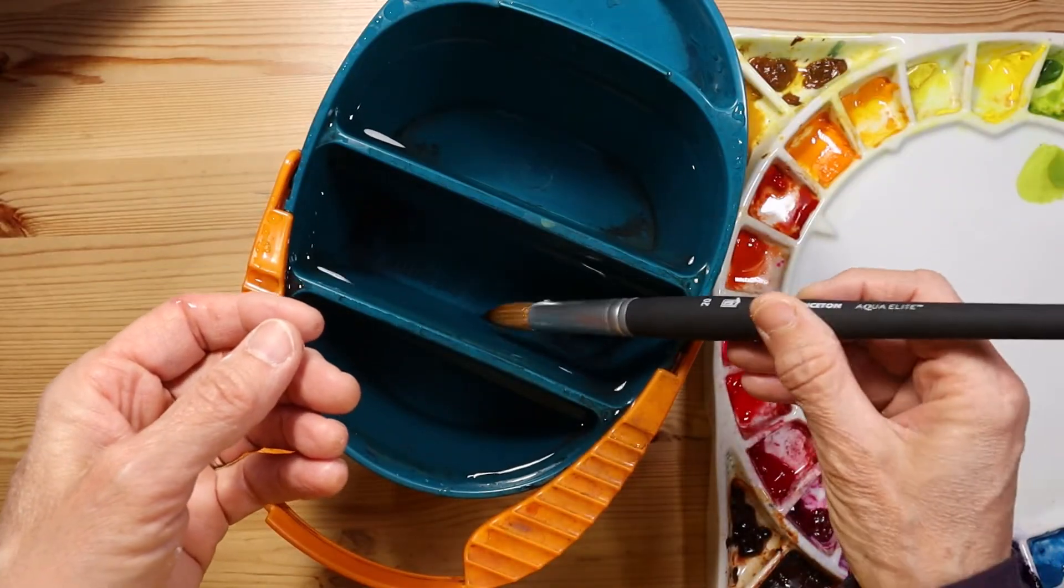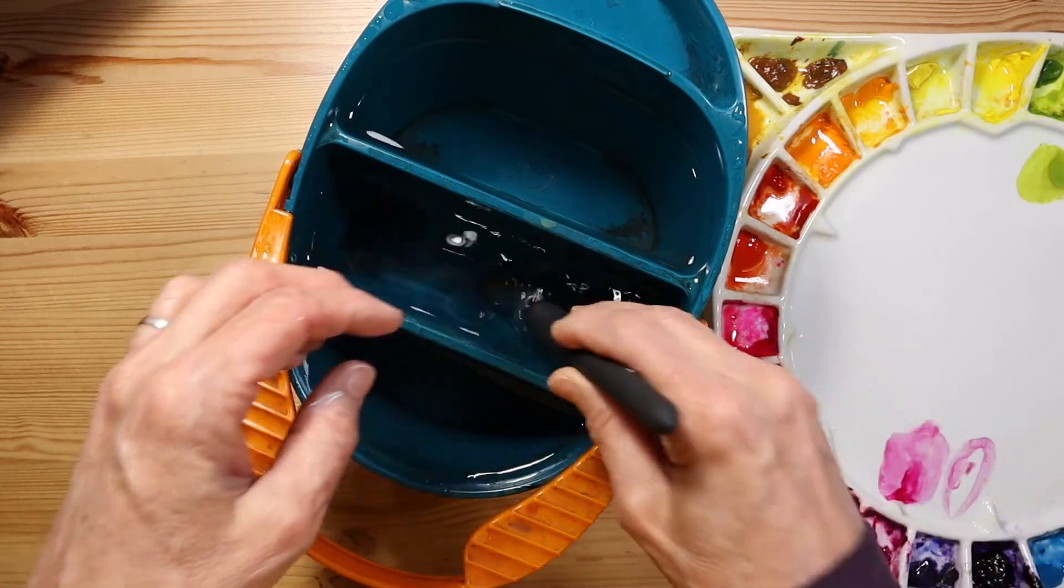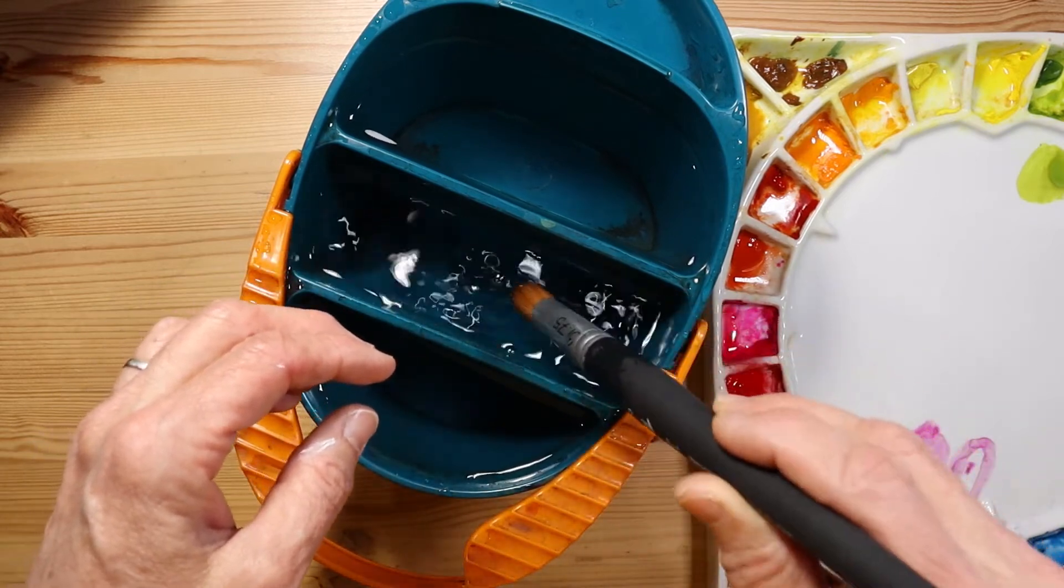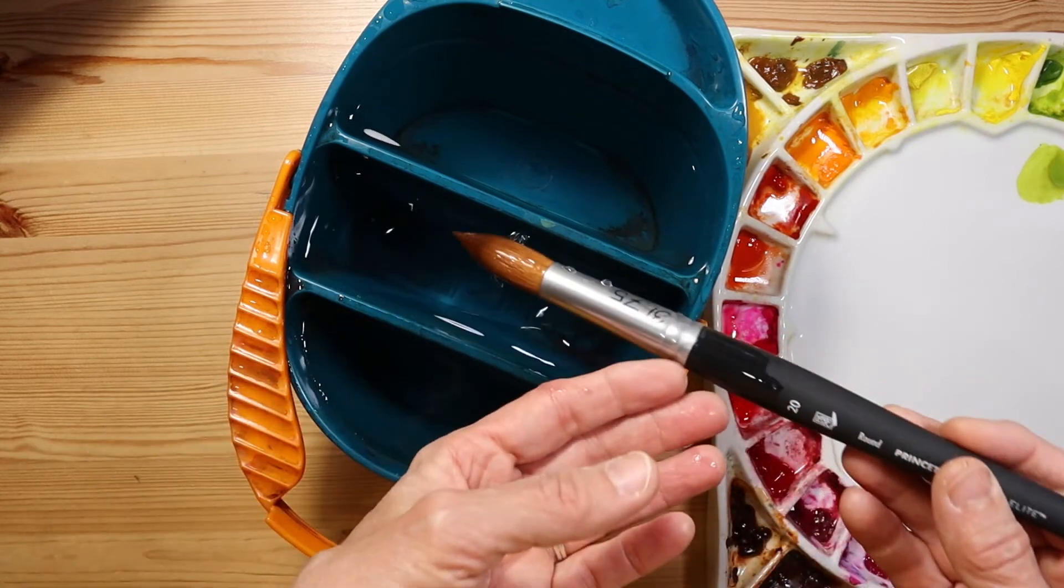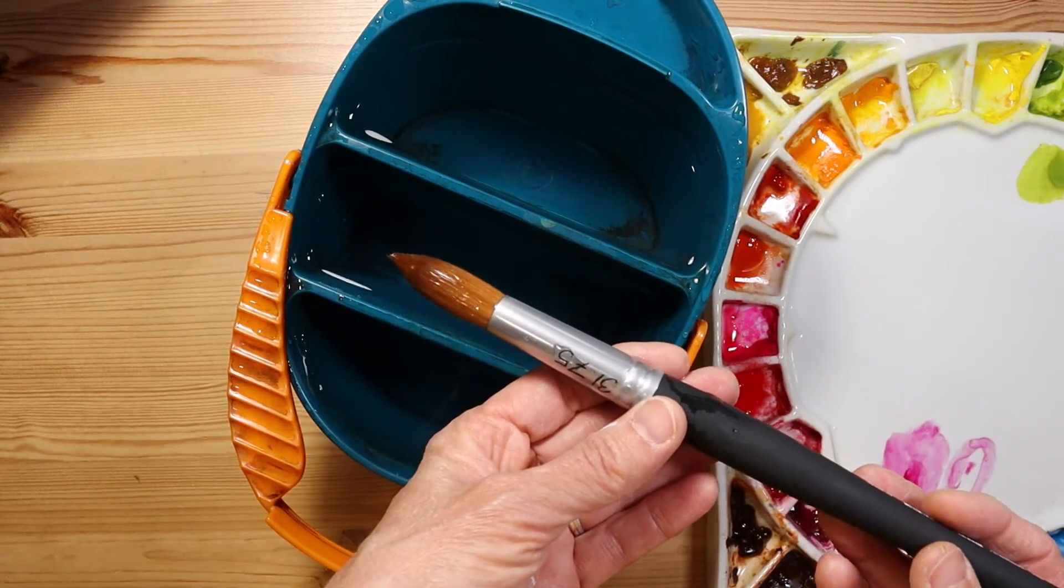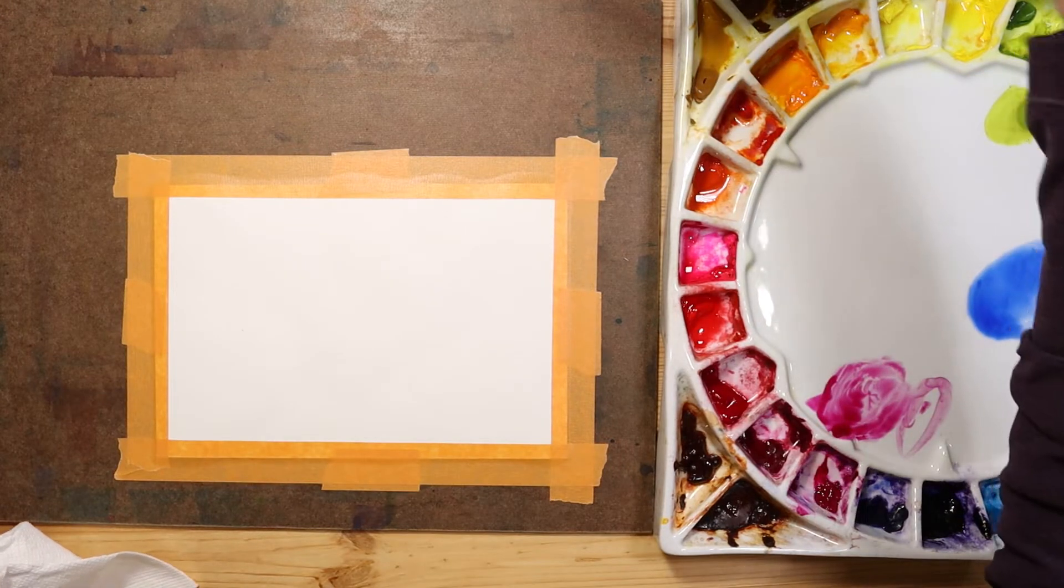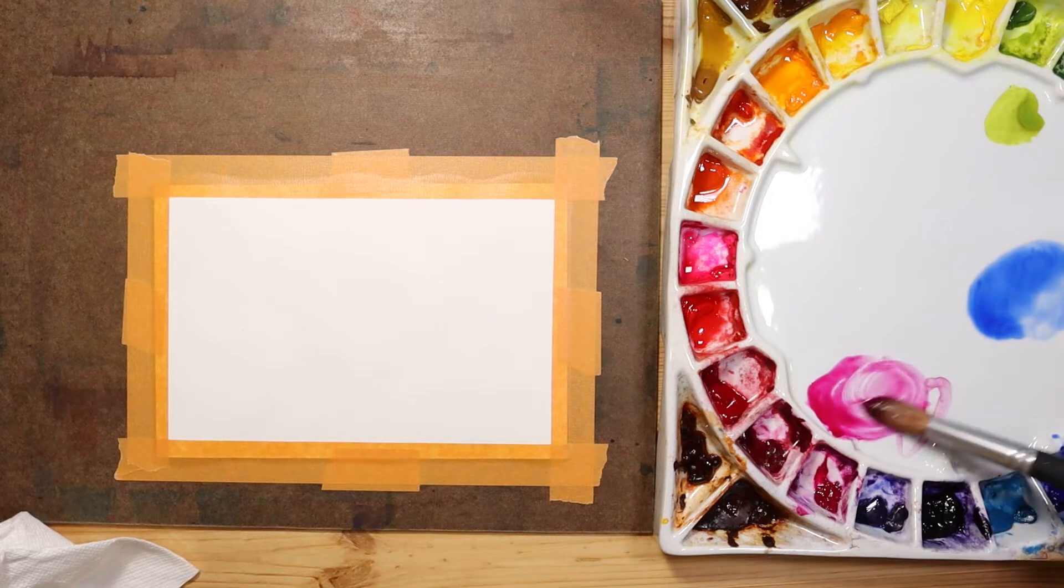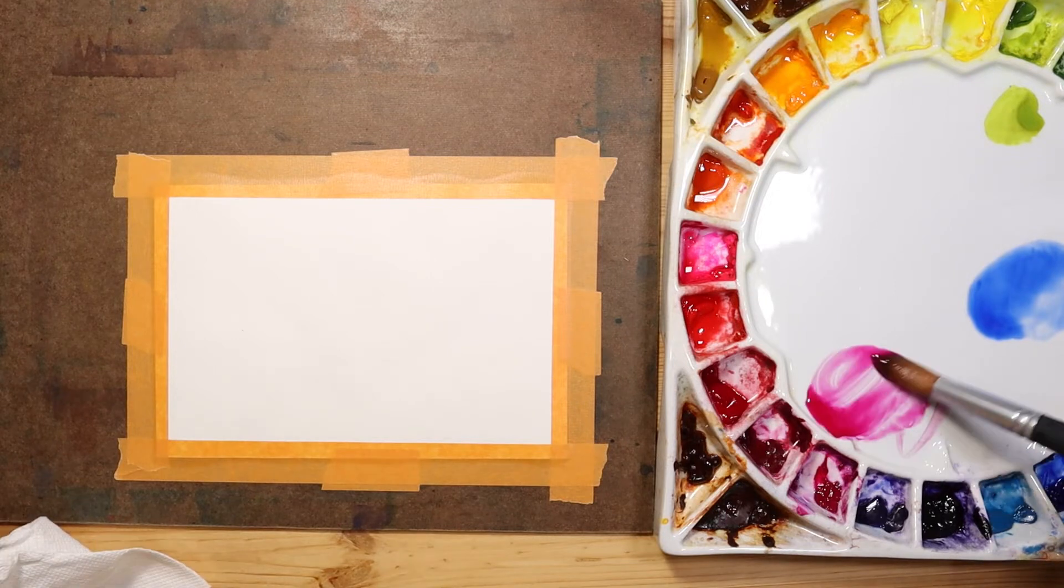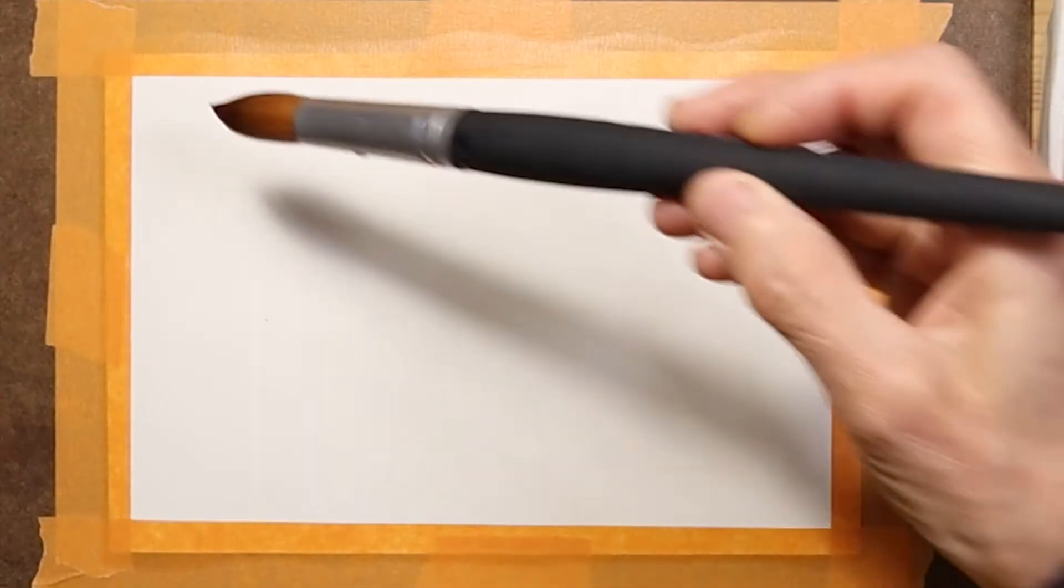First thing you need to do is wet the brush and remove the sizing. Whenever you purchase a brand new brush and bring it home, it's going to have sizing in the bristles, and that keeps and protects them during transport. All right, I've mixed up a little bit of color here on my palette. I've got quinacridone lilac and French ultramarine, both Daniel Smith colors, and I'm just going to see how it lays down the color. A very fine point.